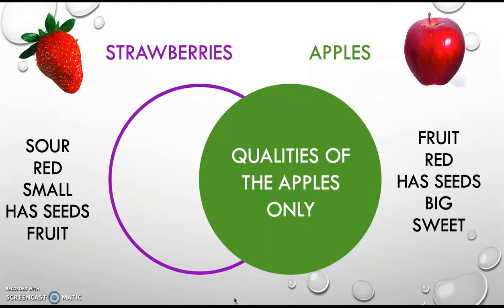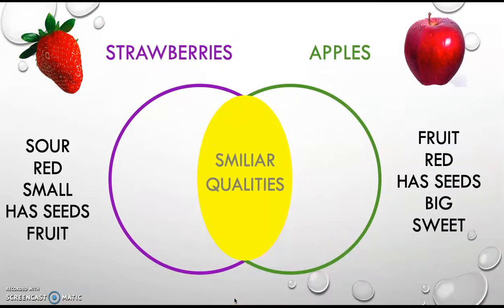And then you're gonna write qualities of the apples only. Finally, you're gonna find the similar qualities for both fruits.